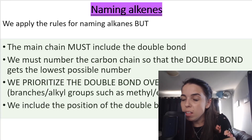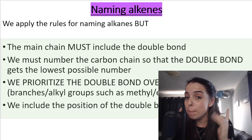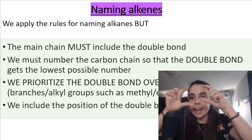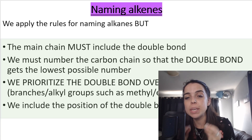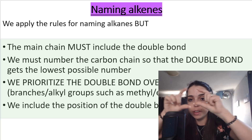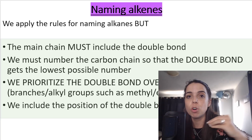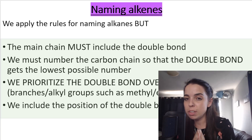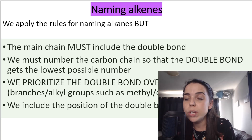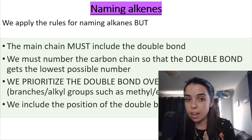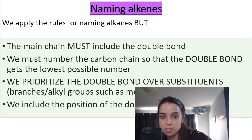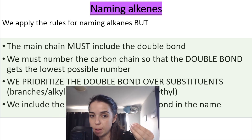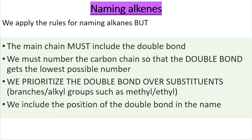To name alkenes, we apply the same rules as for alkanes, but now there's a double bond to consider. The main carbon chain must include the double bond. When numbering the carbons, we must give the double bond the lowest possible number — we prioritize the double bond over substituents like methyl or ethyl branches. We also include the position of the double bond in the name.